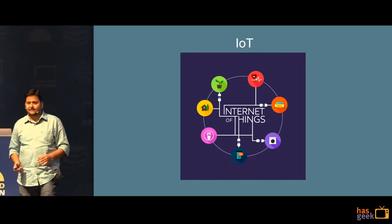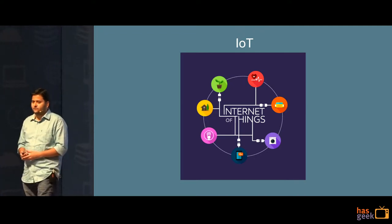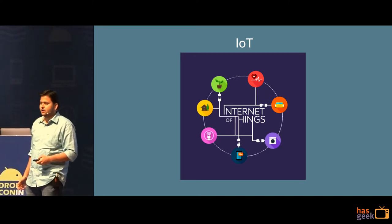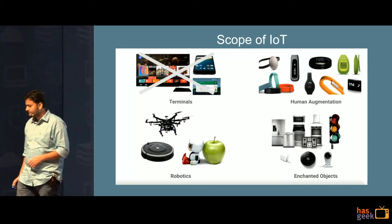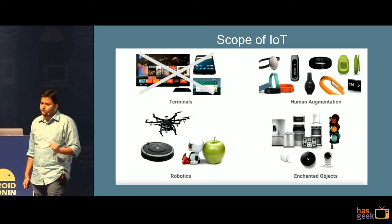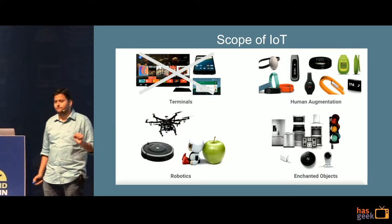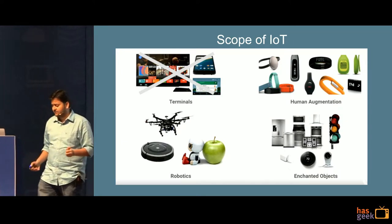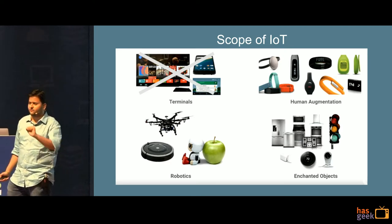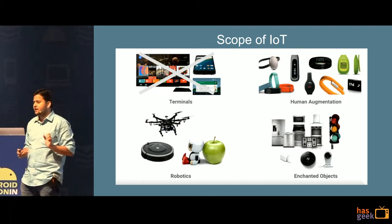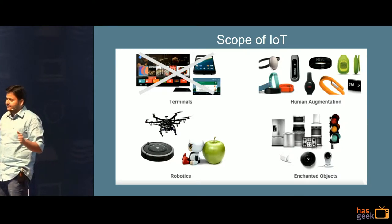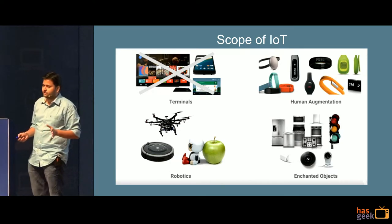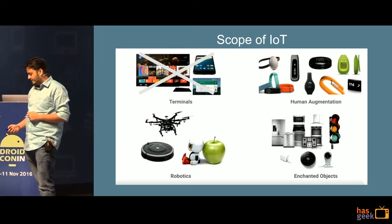What is IoT basically? In general, it's whatever we interact with day in, day out — a car, a bulb, your thermostat, stuff like that. When we talk about IoT from the perspective of Brillo and Weave, we want to focus on a set of devices in the category of human augmentation, the robotic side — how we can port Brillo and Weave to robot devices — and enhanced objects like refrigerators, washing machines, and microwaves used at home.